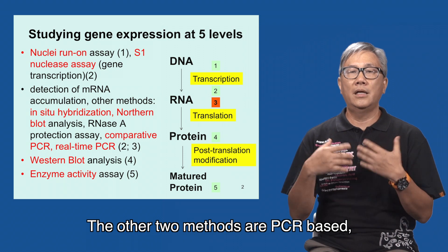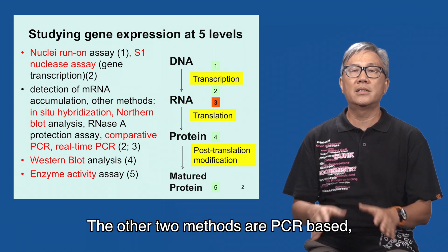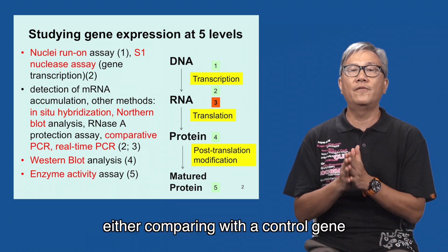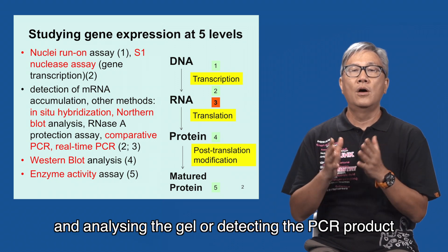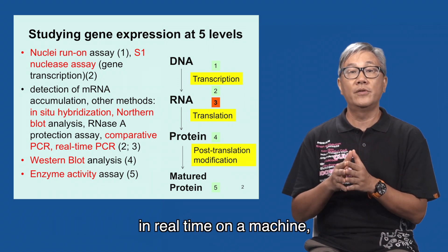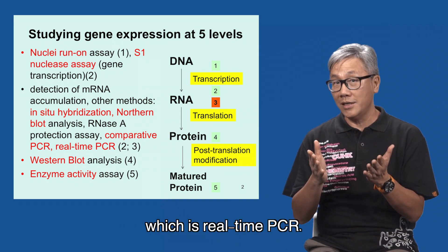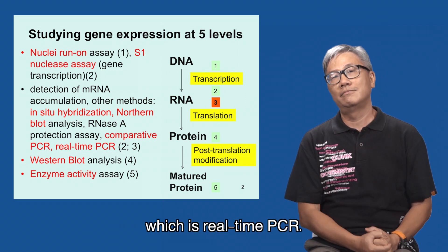The other two methods are PCR-based: either comparing with a control gene and analyzing the gel, or detecting the PCR product in real-time on a machine, which is real-time PCR.